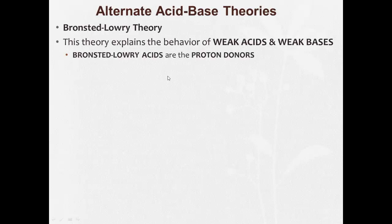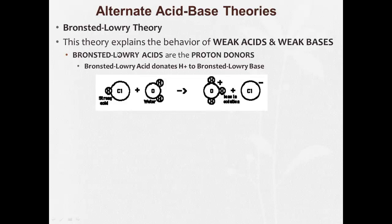So a Bronsted-Lowry better explains the behavior of weak acids and bases. Now for Bronsted-Lowry, acids are said to be proton donors. The Bronsted-Lowry acid donates an H plus to the Bronsted-Lowry base. So right here's a strong acid and water. The HCl donates this proton to the water molecule. We end up with H3O plus and a Cl minus.